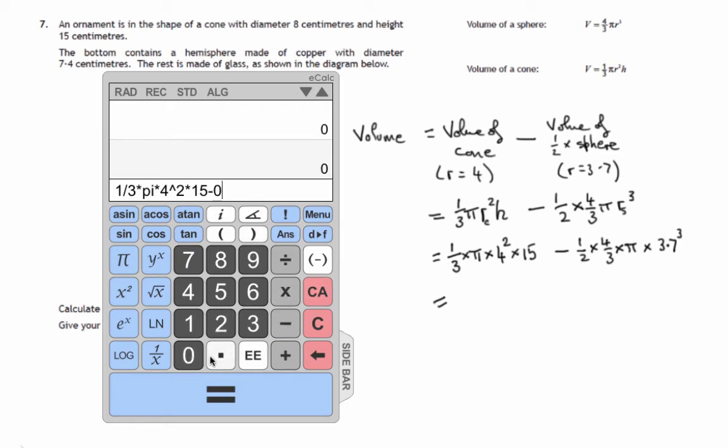So minus 1 half, which is 0.5, times 4 thirds, 4 divided by 3, times pi, times 3.7 cubed, raised to the power 3.